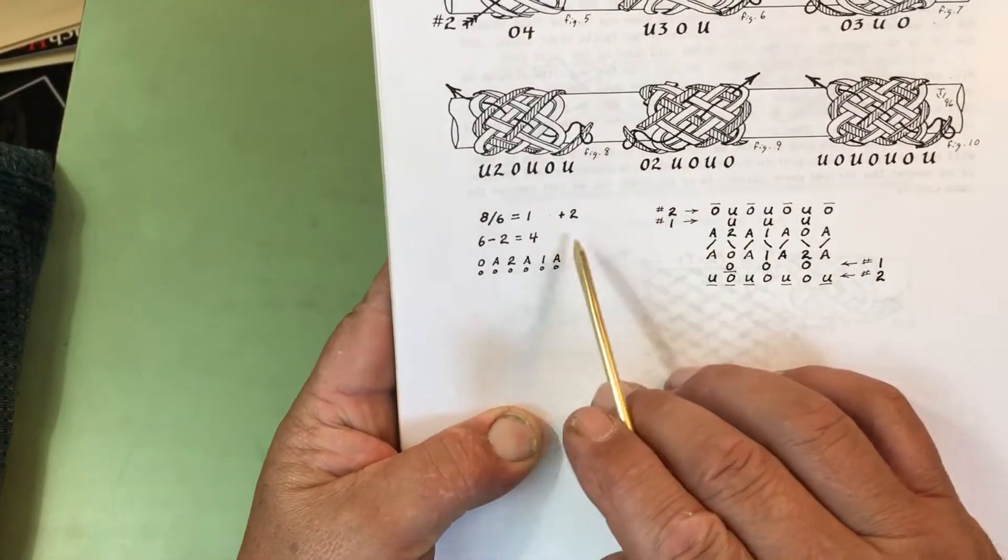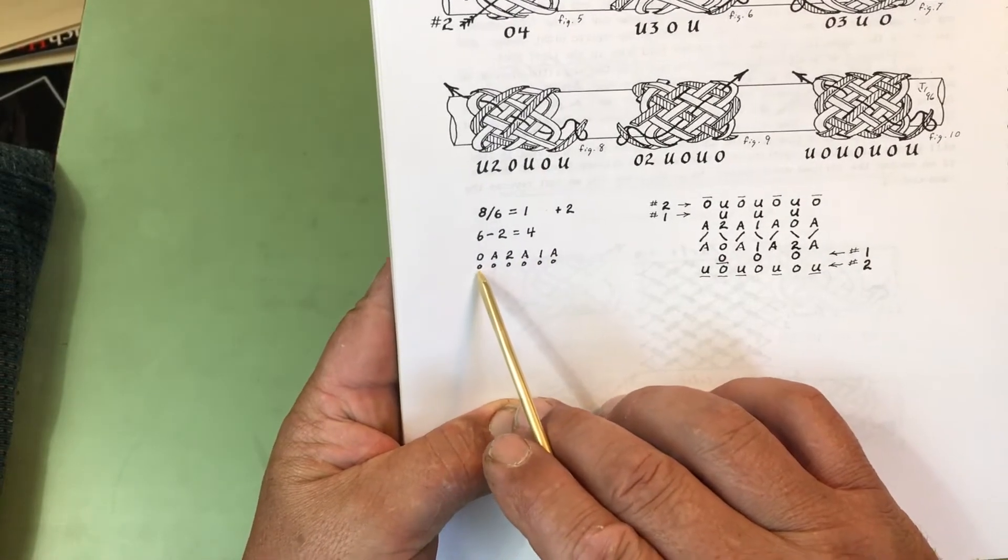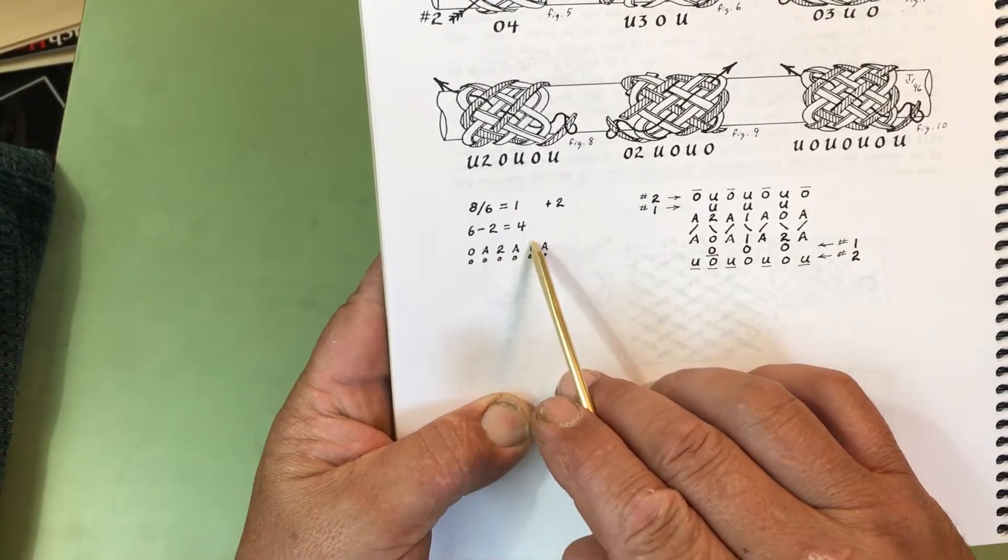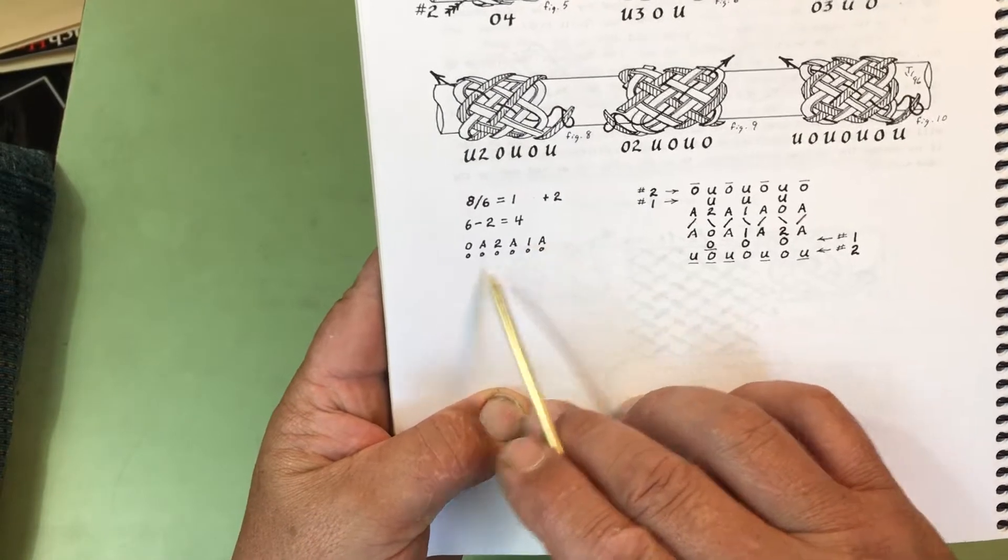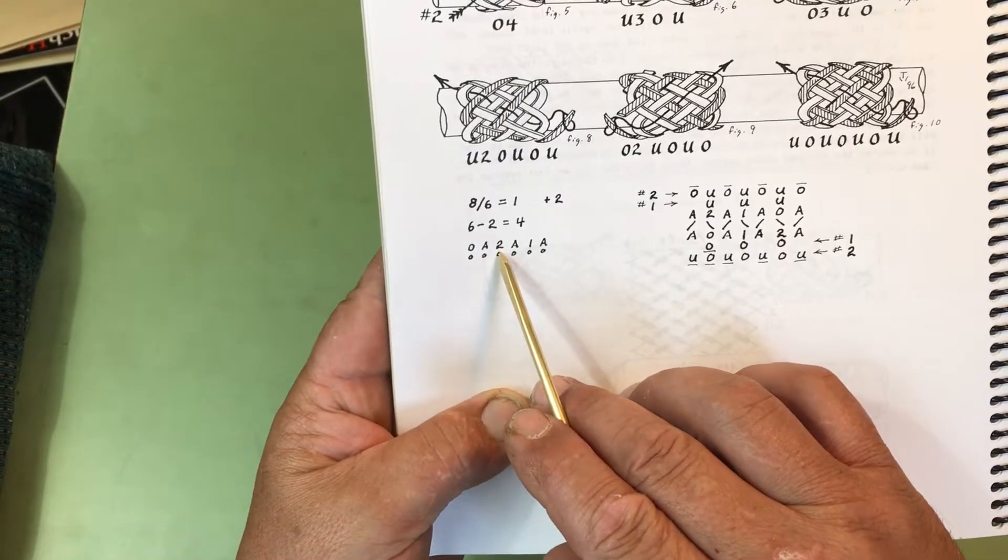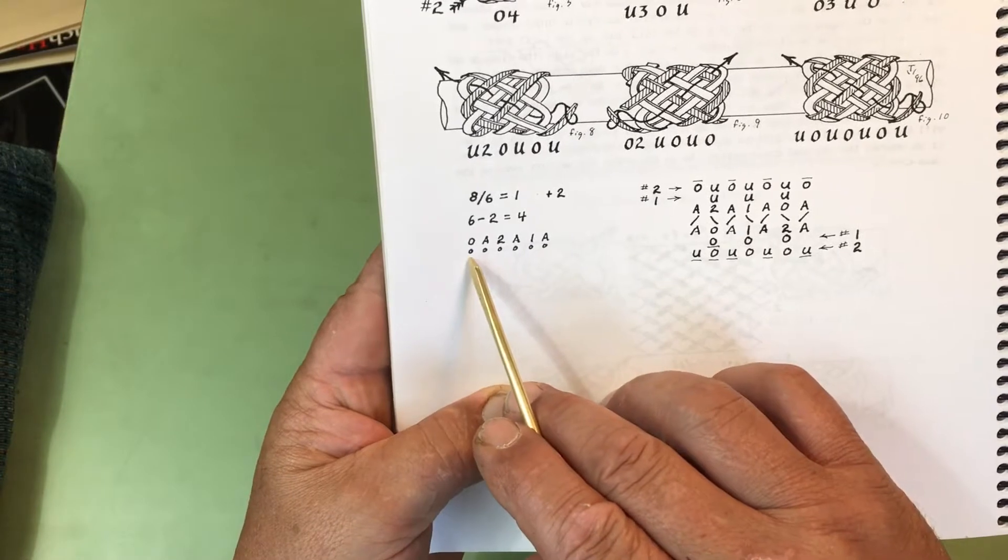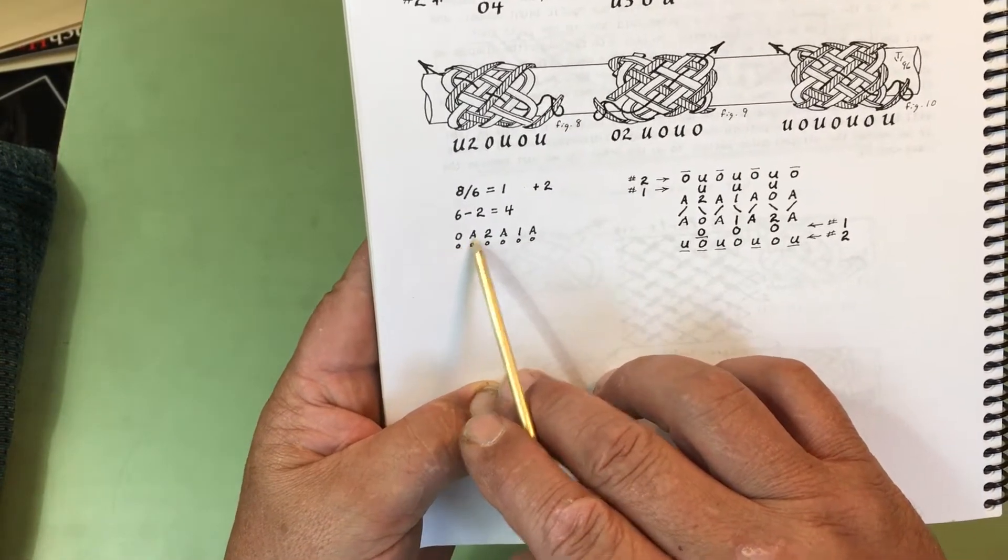And you can set up the algorithm diagram to tie that knot. And, as you'll see here, when you do your count value of four, you count over one, two, three, four, and you put a one. One, two, three, four, you put a two. One, two, three, four, you're back to the start.